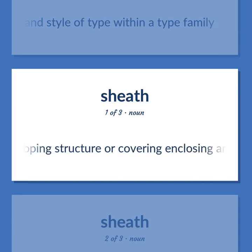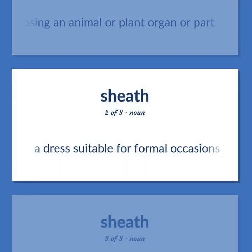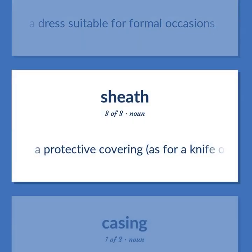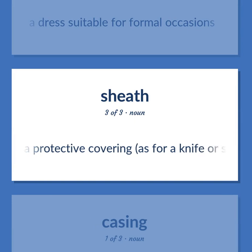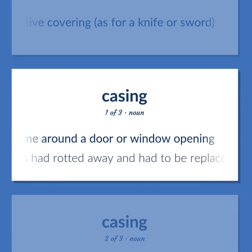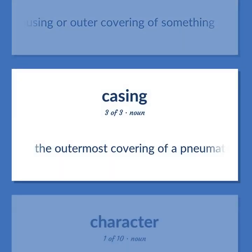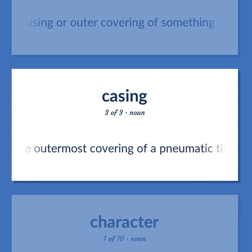CASING: An enveloping structure or covering, enclosing an animal or plant organ or part. A dress suitable for formal occasions. A protective covering, as for a knife or sword. The enclosing frame around a door or window opening — the casings had rotted away and had to be replaced. The housing or outer covering of something. The outermost covering of a pneumatic tire.